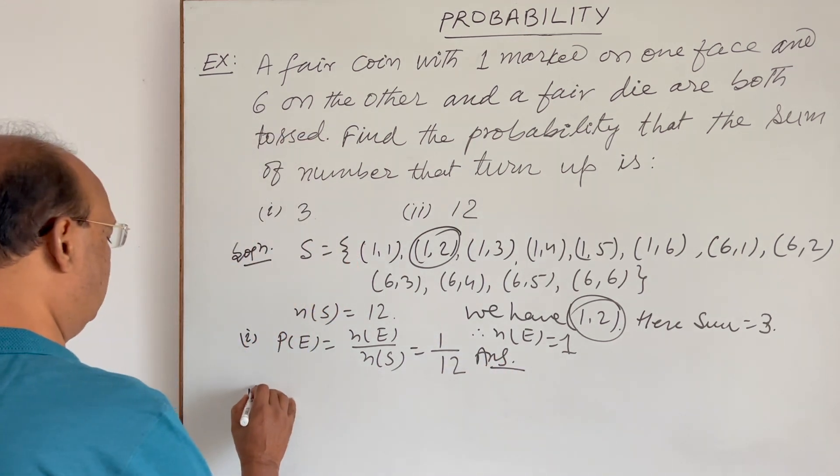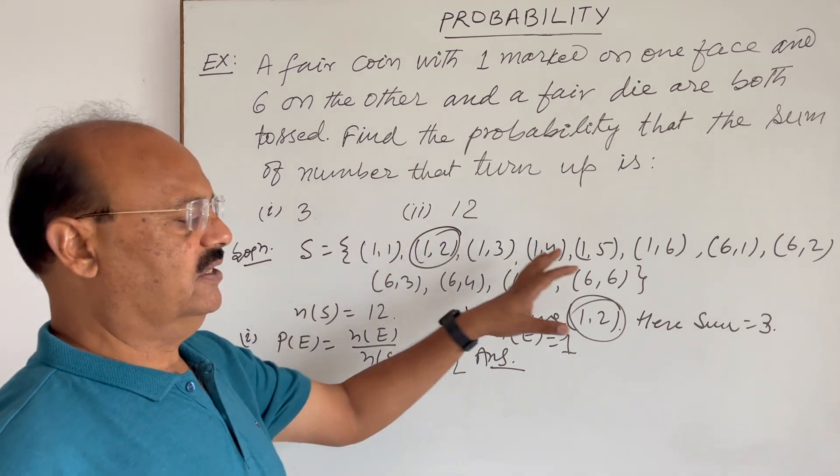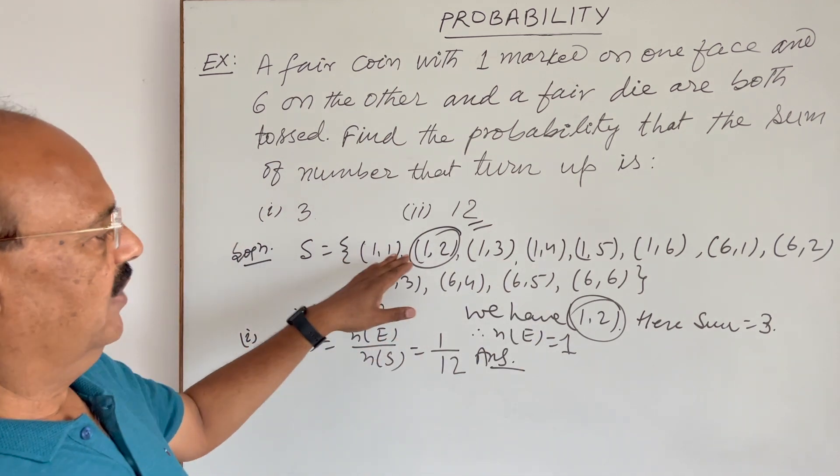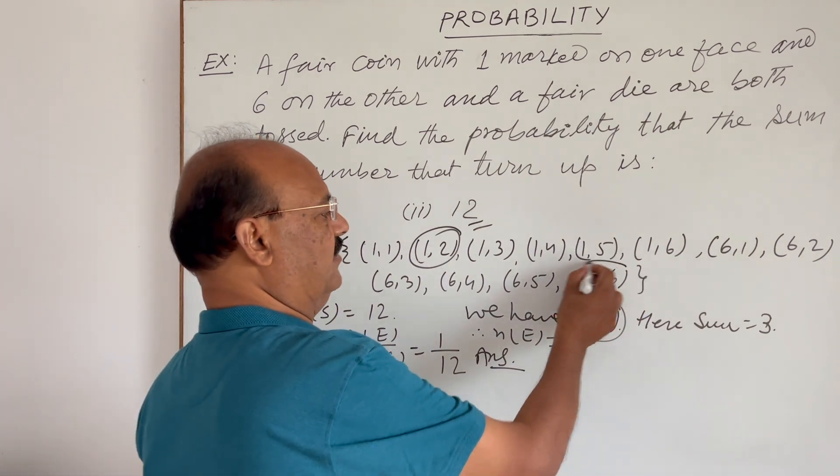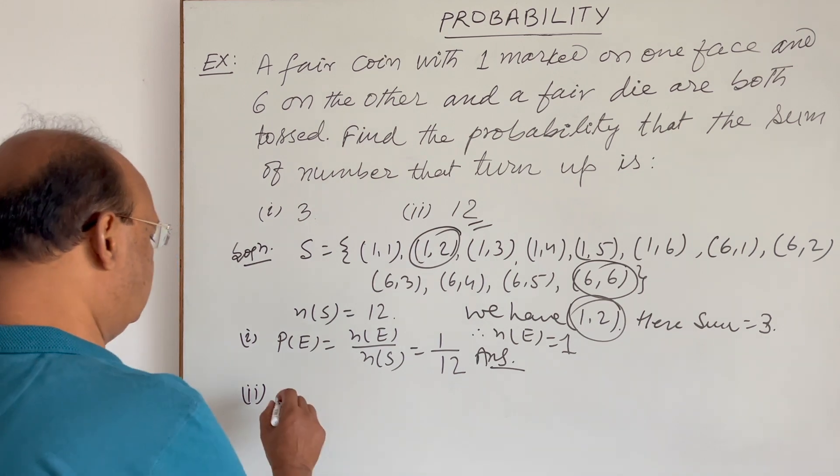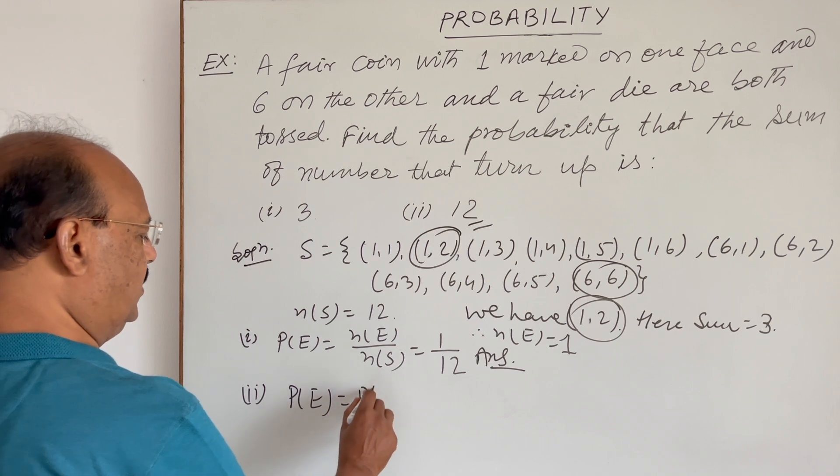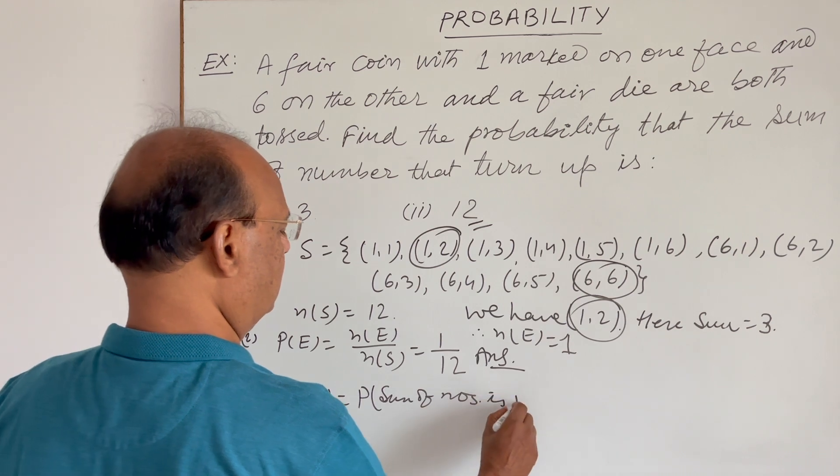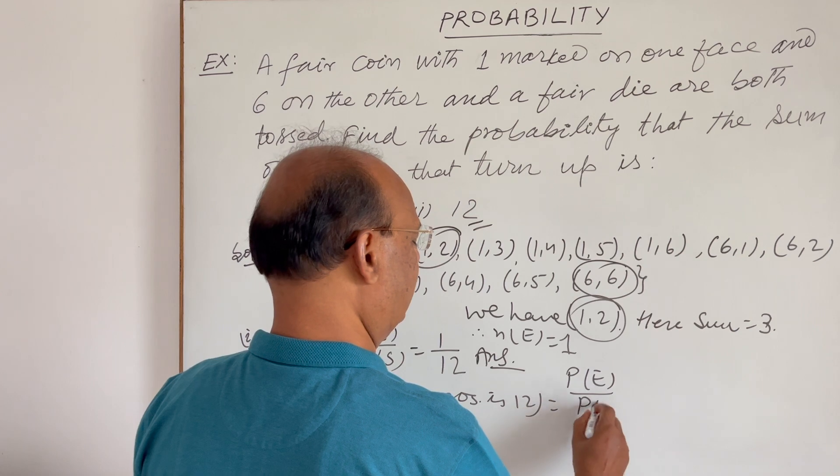And second part, when sum of these two numbers in different ordered pairs is twelve. So, you see, where is the element where sum of two numbers is twelve? This element, twelve, six plus six is twelve. So, in this case, probability of this event, this event means probability where sum of numbers is twelve, we will use the same formula, n(E) divided by n(S).